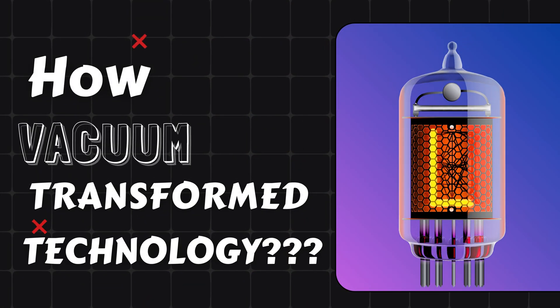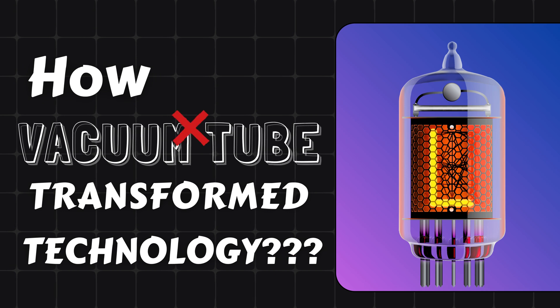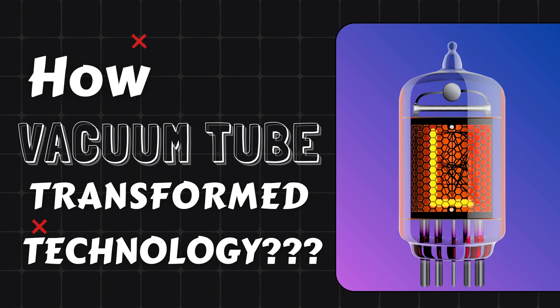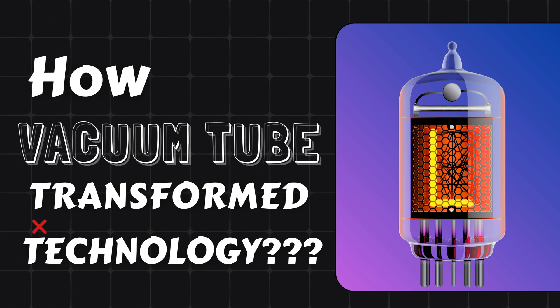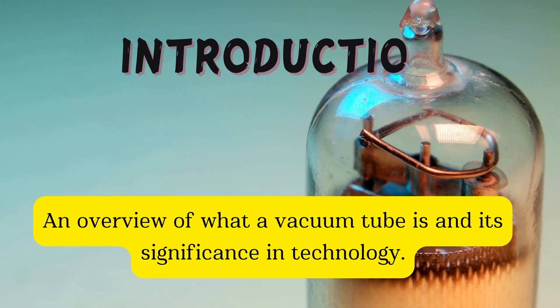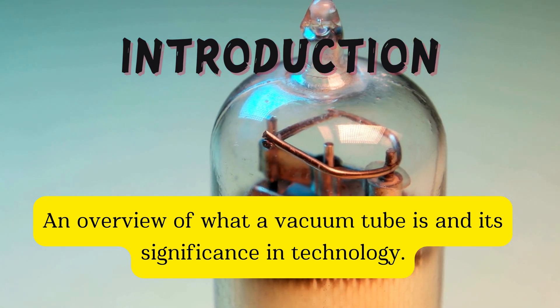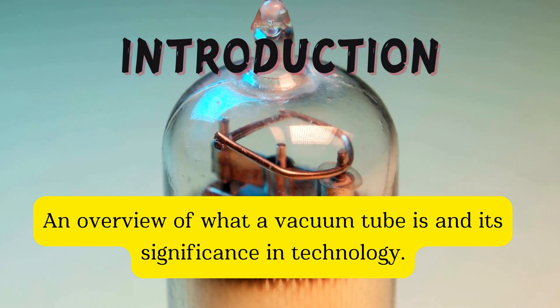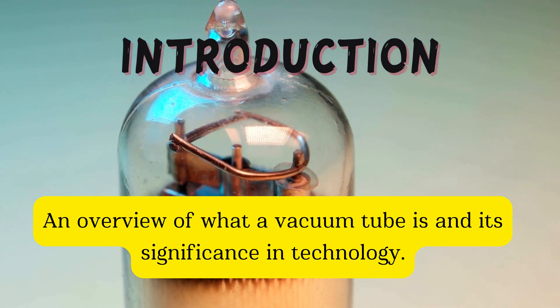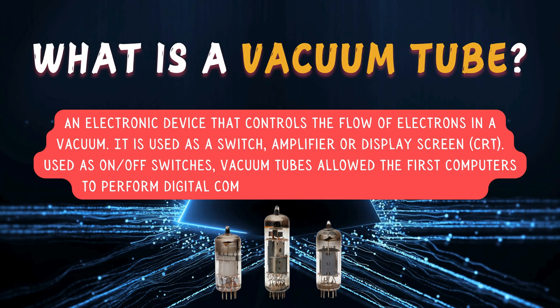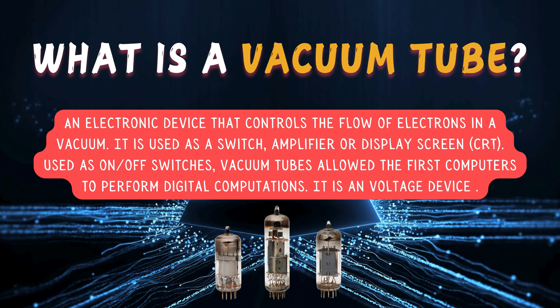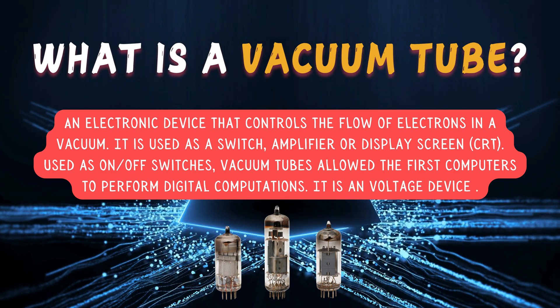In this video we'll dive into the world of vacuum tubes, specifically the EL84 tube. We'll explore how the EL84 tube functions as an amplifier. A vacuum tube is an electronic device that controls the flow of electrons in a vacuum.